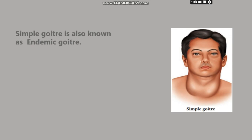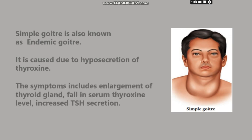Simple goiter, also known as endemic goiter, is caused due to hyposecretion of thyroxin. The symptoms include enlargement of thyroid gland, fall in serum thyroxin level, and increased TSH secretion.